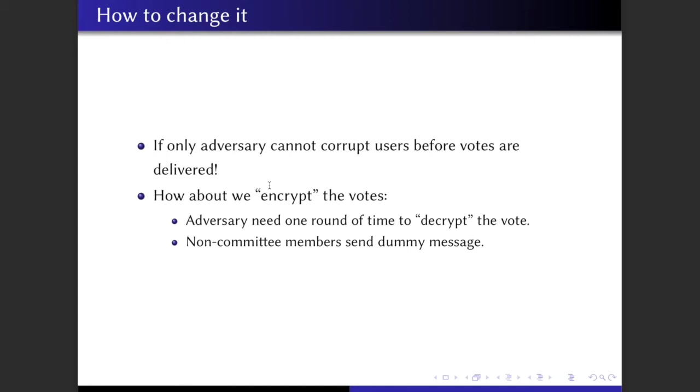However, this does not work for a strongly adaptive adversary as the strongly adaptive adversary can just detect the committee's members whenever they send a message. It then just corrupts them and also erases the message sent. So if only the adversary cannot corrupt any users before those messages are delivered.